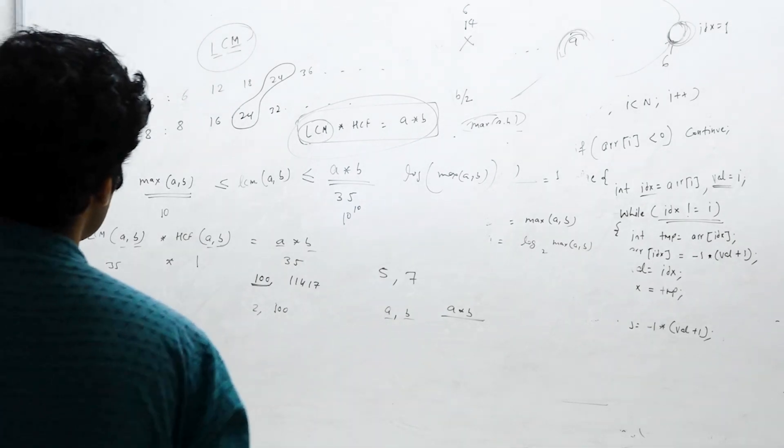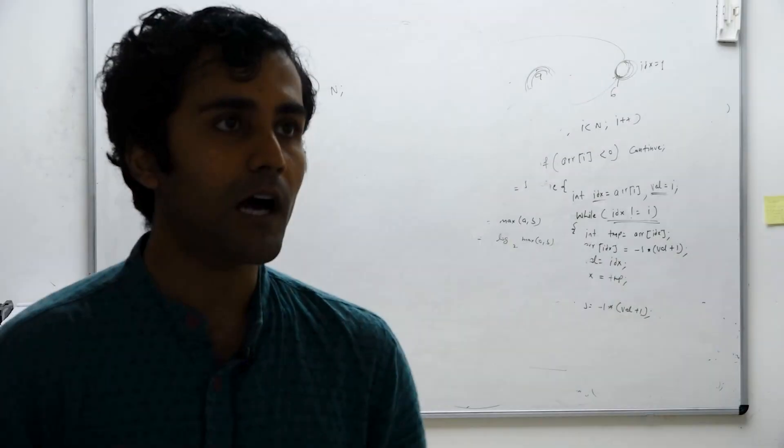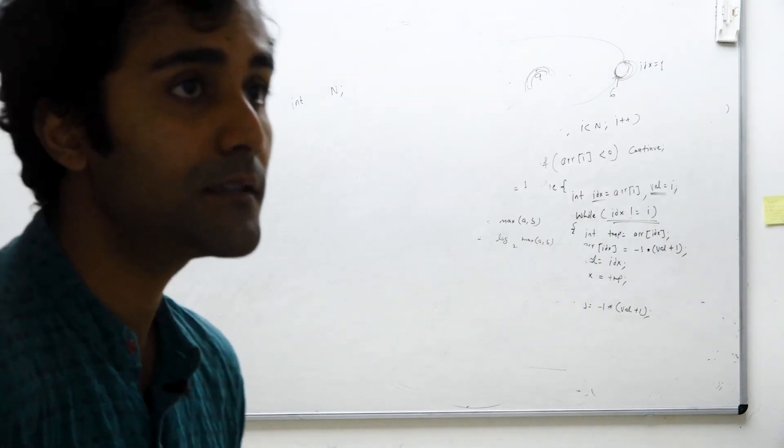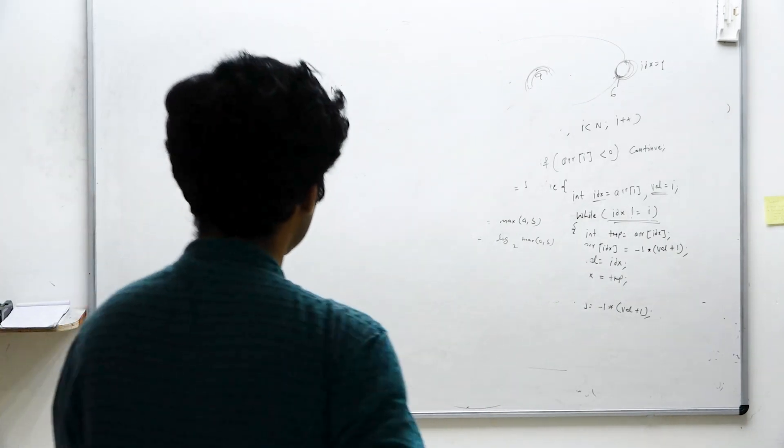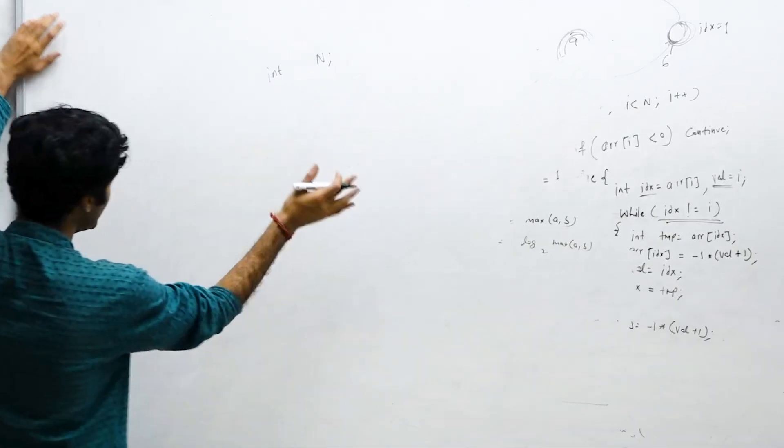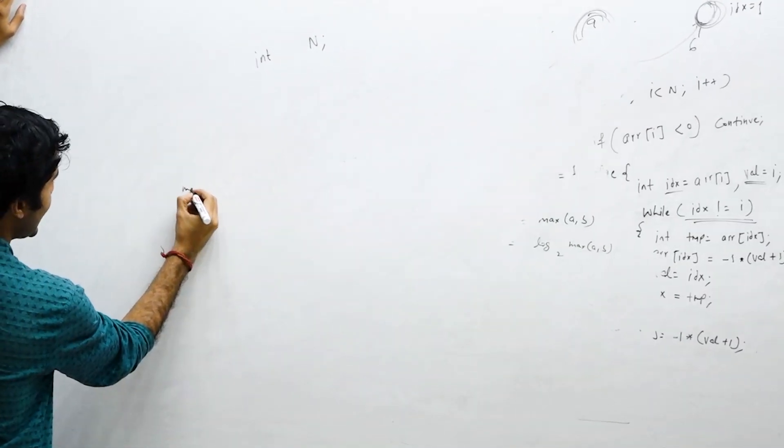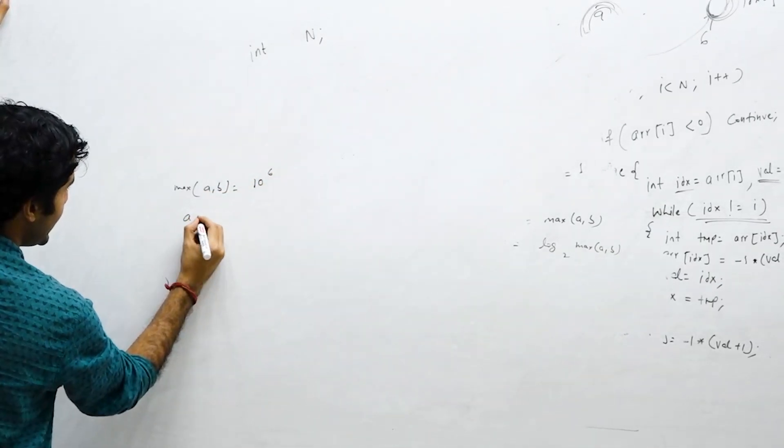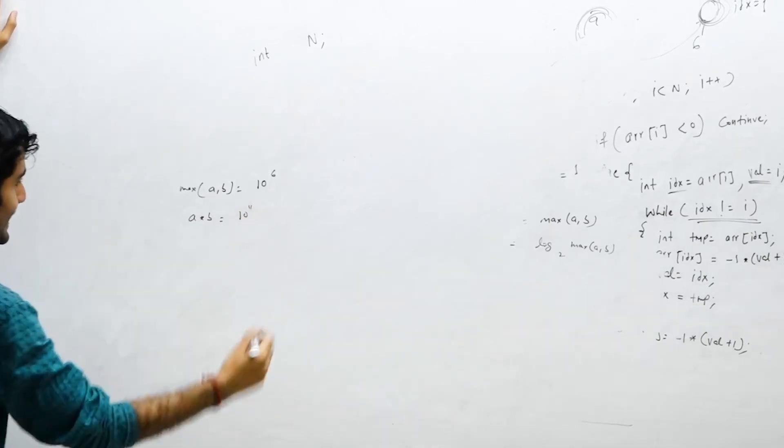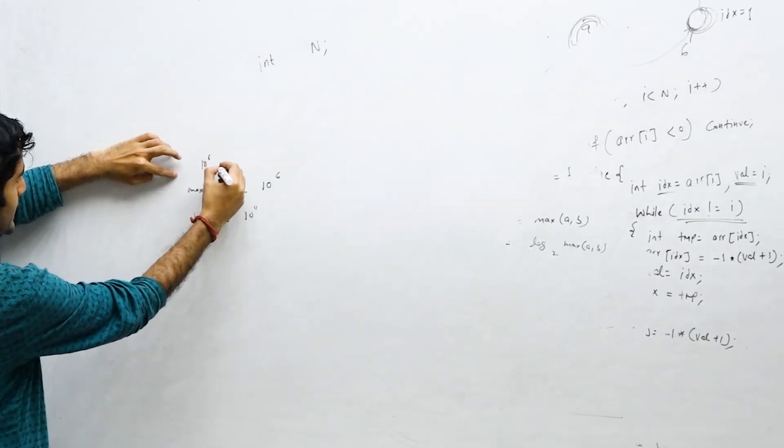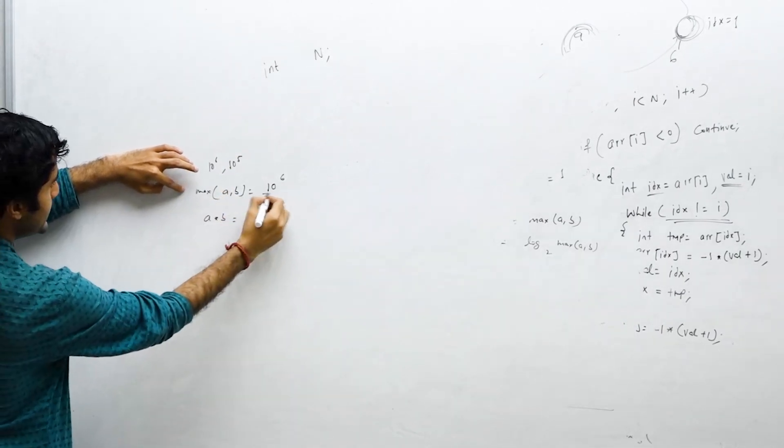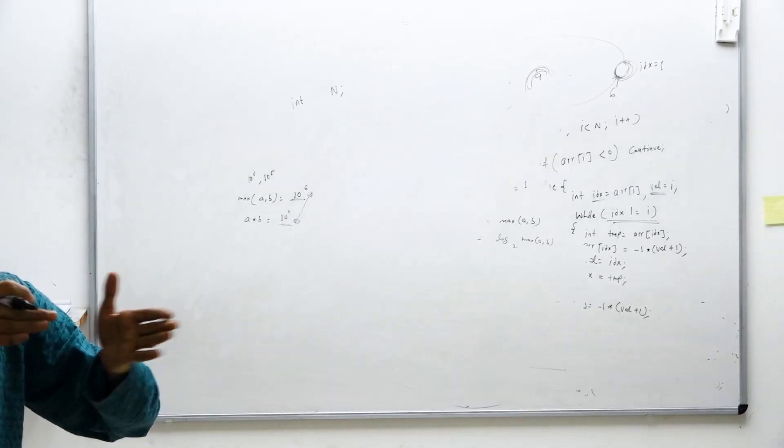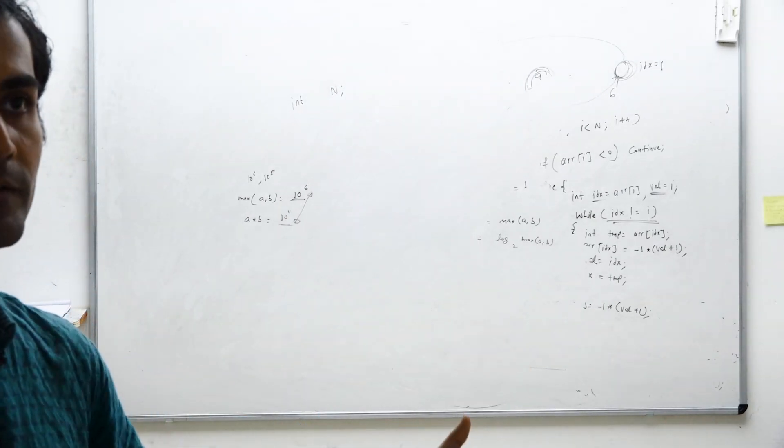Is that clear to everyone? This is a very standard way through which you can compute LCM of the two numbers. It can happen that max of a comma b is a number like 10 raised to power 6, and a into b is something like 10 raised to power 11. This is quite likely if your a was 10 raised to power 6 and b was 10 raised to power 5. Max can be this and product can be this. Still this is a very huge range. The intention was just to show you that this range can be very very large if you iterate over it.